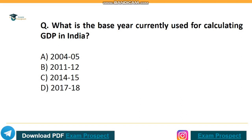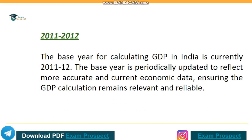Here is the last question for today's session: What is the base year currently used for calculating GDP in India? Correct answer: option B, 2011–2012. The base year for calculating GDP in India is currently 2011–2012. The base year is periodically updated to reflect more accurate and current economic data, ensuring that GDP calculation remains relevant and reliable.